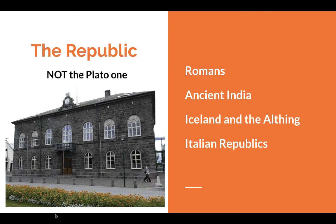On the left is the Althing building from Iceland. In the Renaissance period, you also had the Italian republics — places like Florence and others that developed this representative-style government. Not every single group was represented, but the formation of the republics went through all of these groups, really hitting big with the Americans in the late 1780s into the 1790s.